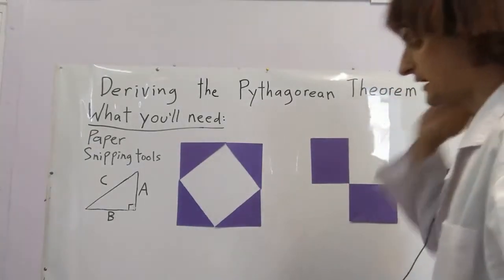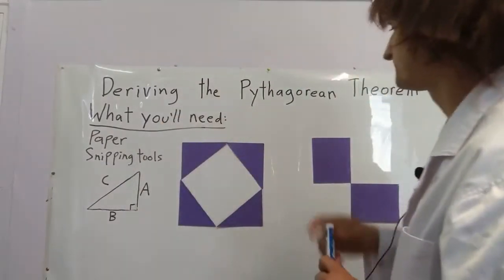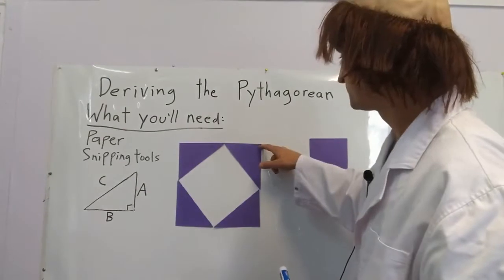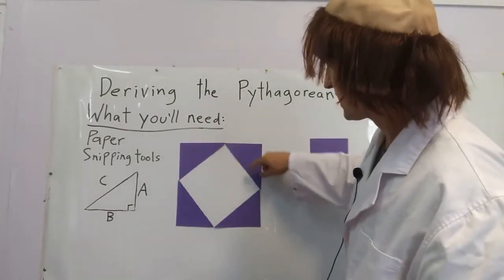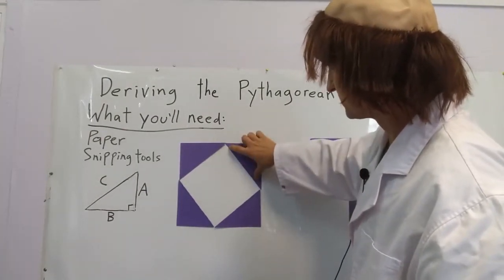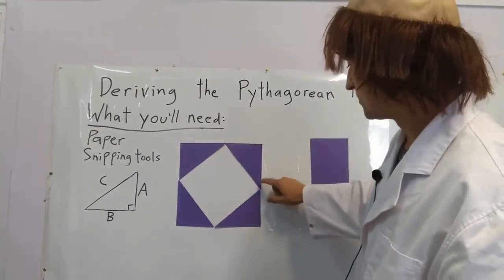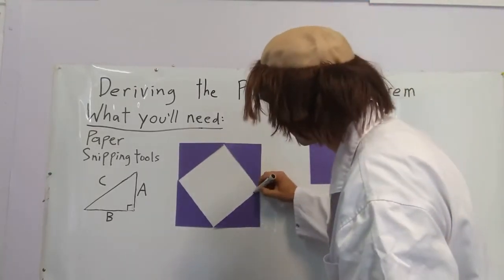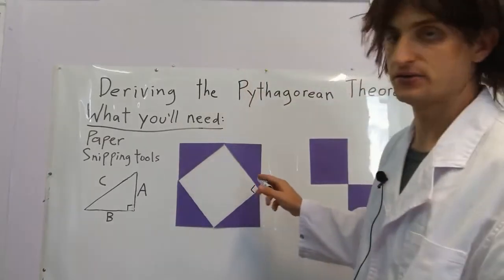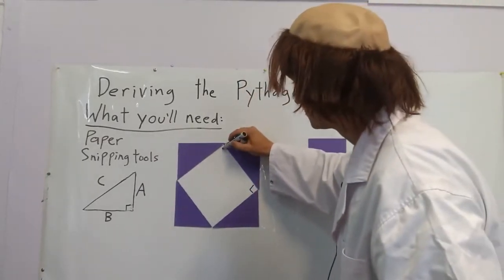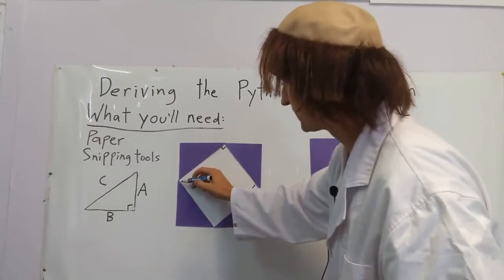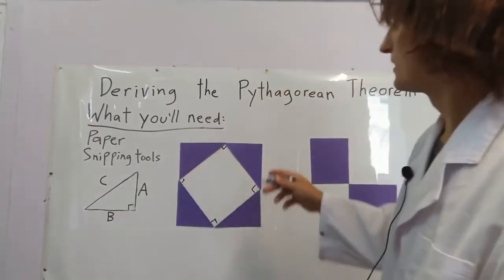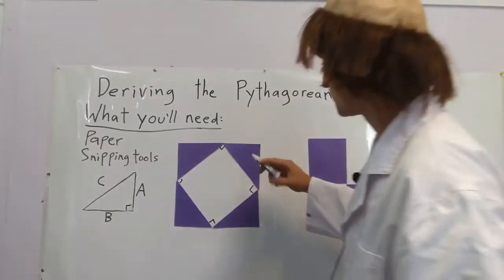Now time for some geometry. These are all right angles. This angle and this angle add up to 90 degrees, which means that this one and this one add up to 90, which leaves us with this one being 90 degrees. That same principle can be applied across the whole shape. This is a square.